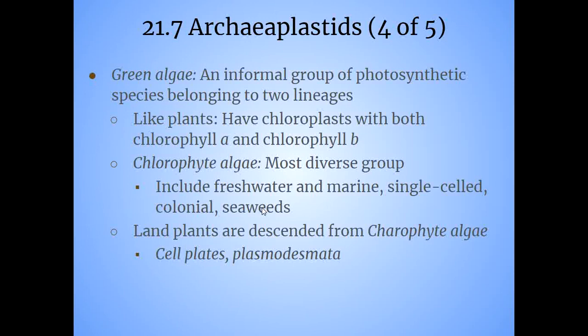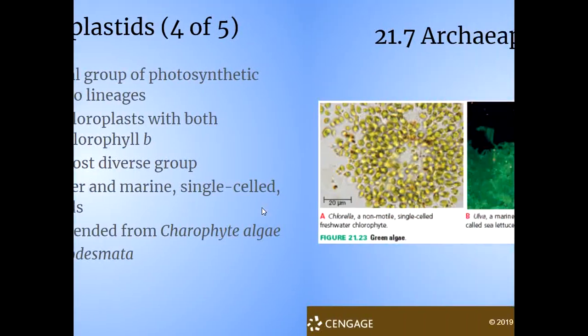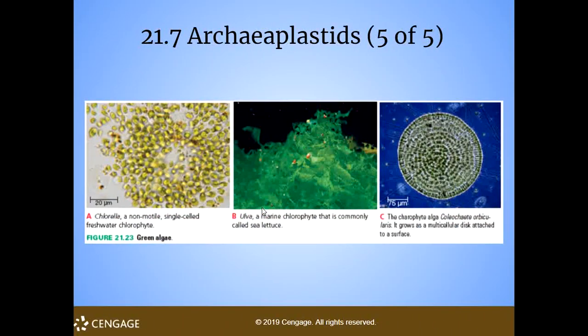One interesting fact: the book mentions that a green algae was used by Melvin Calvin when he was studying the light and dark reactions in photosynthesis. Here are some pictures — this is called sea lettuce, and it's eaten by a lot of people. Here are the non-motile single cells, and then this has formed a disc attached to something.